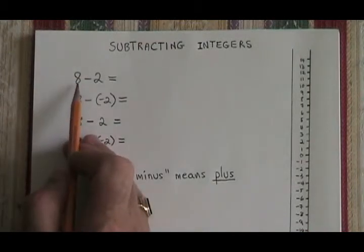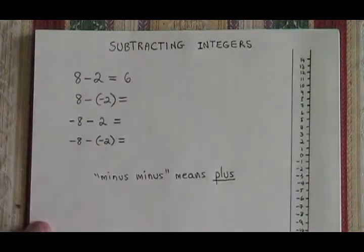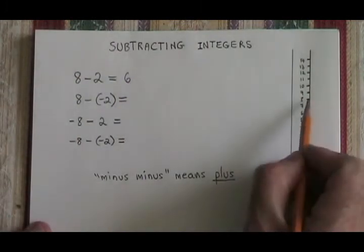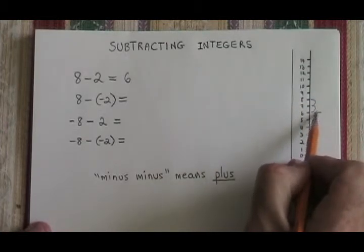Here we have 8 and we're subtracting 2. We already know that 8 minus 2 is 6. But let's show it on the number line. Here's our starting point 8. We're subtracting 2 so we go down by 2 and we end up at 6.